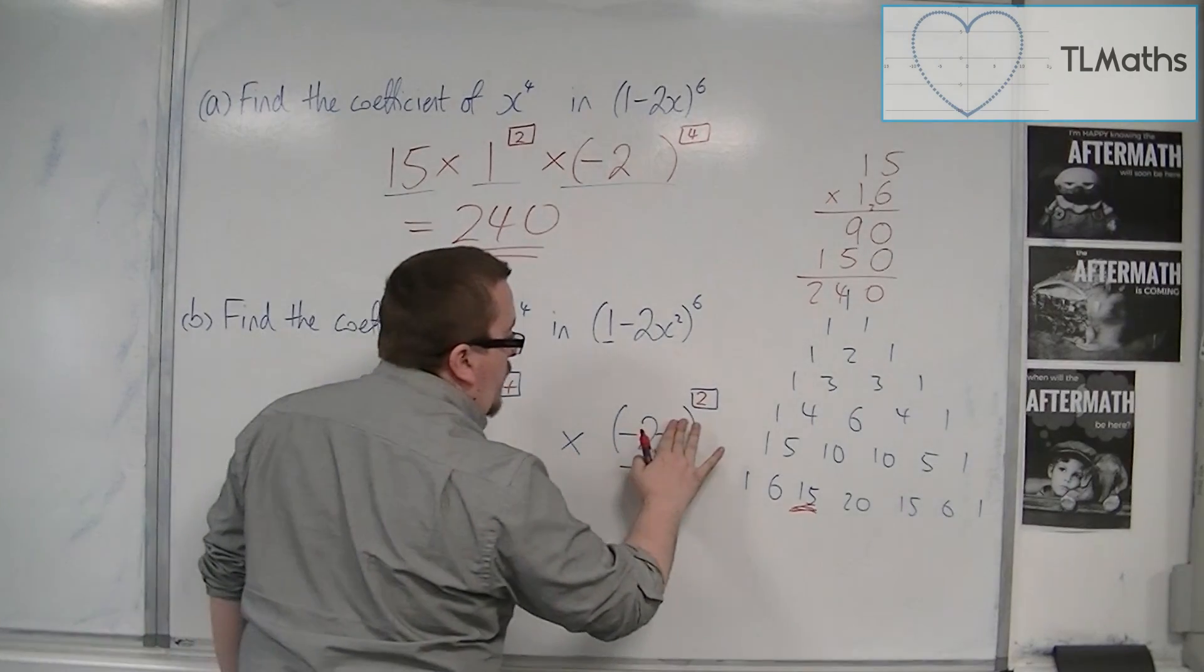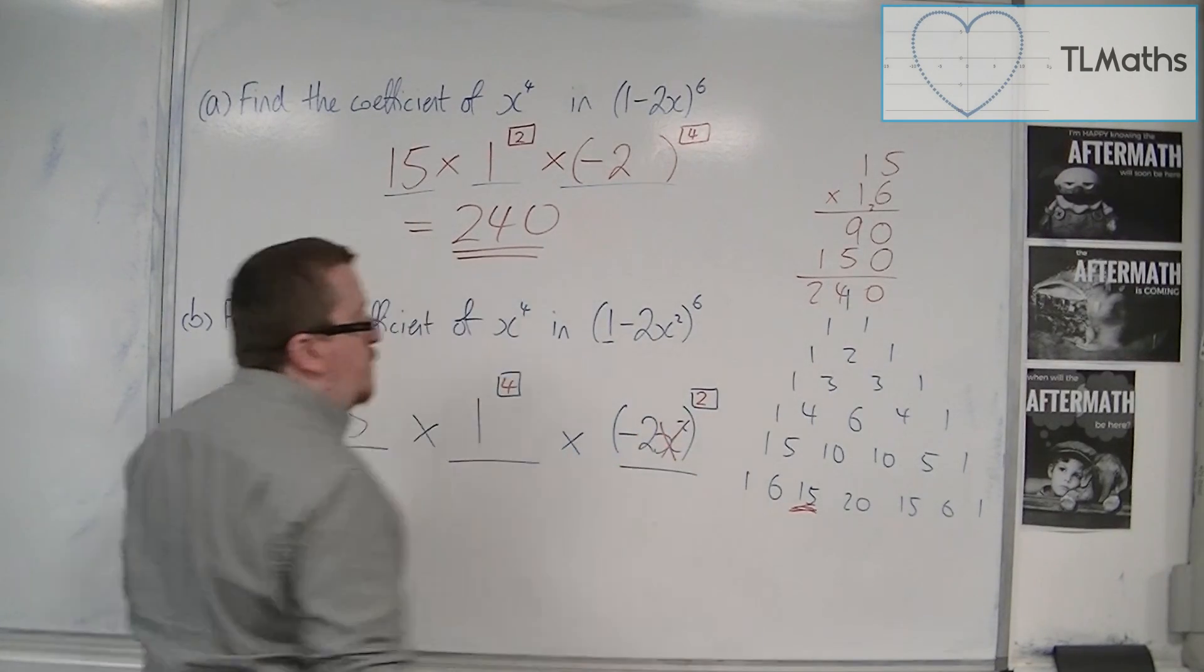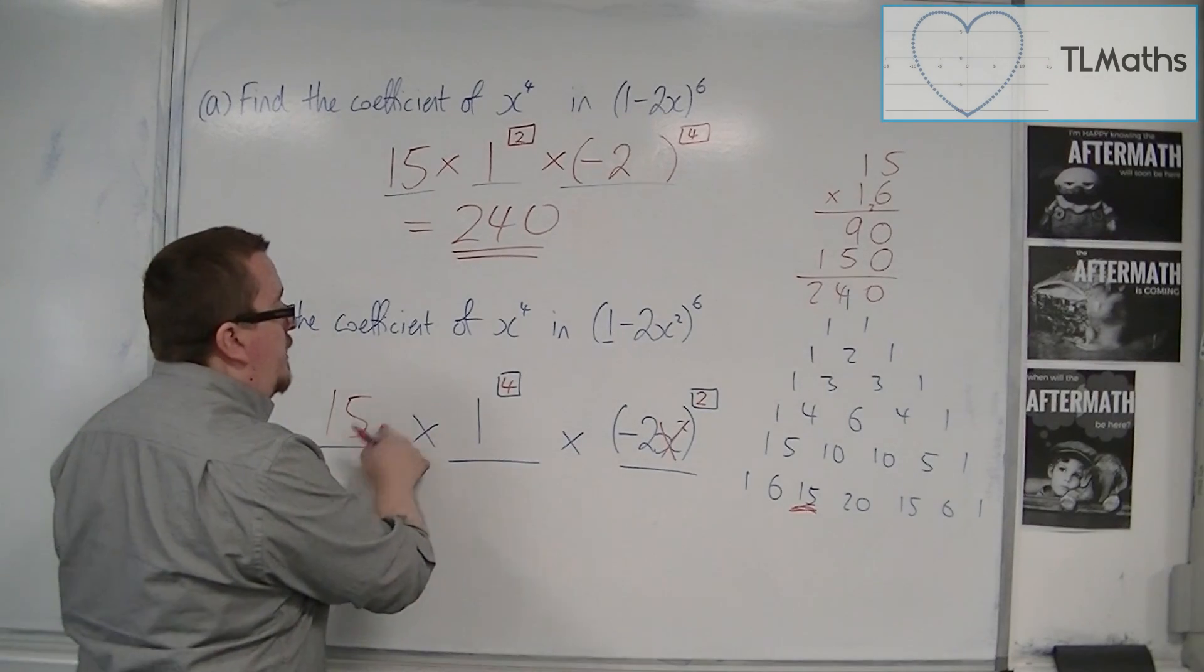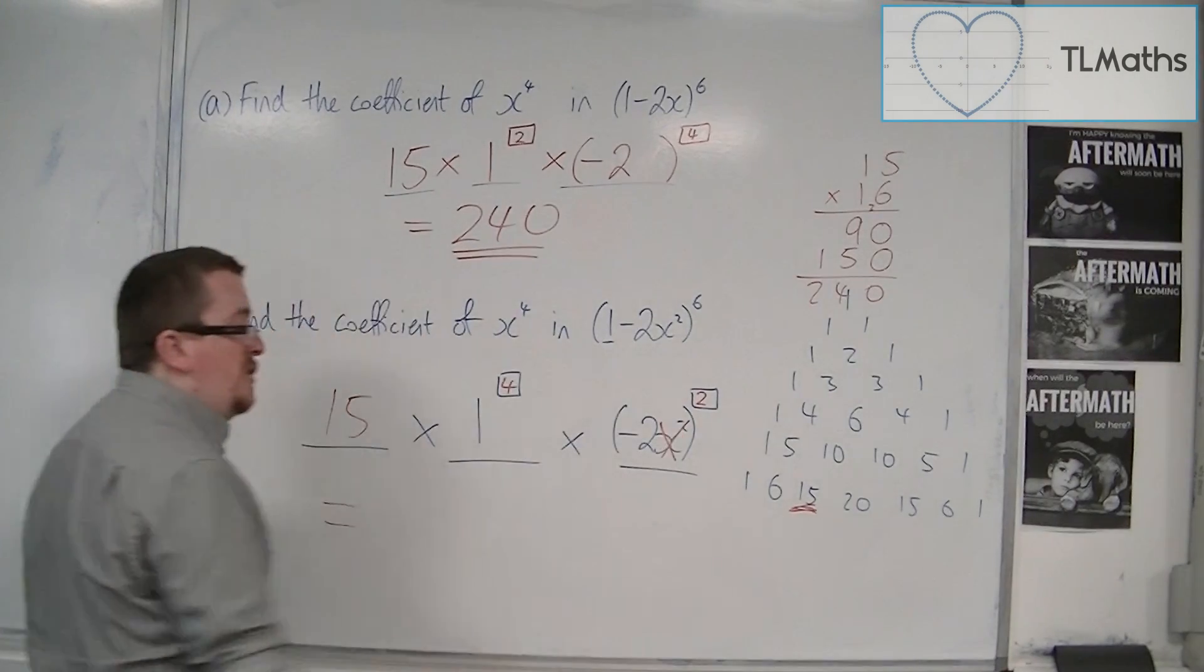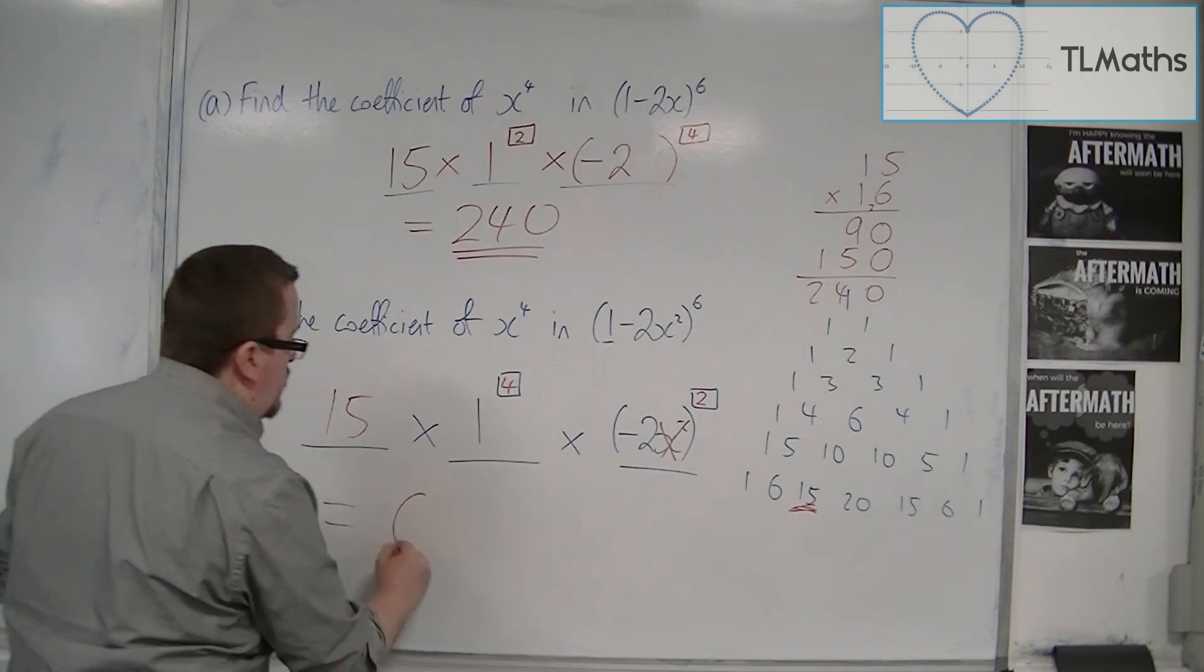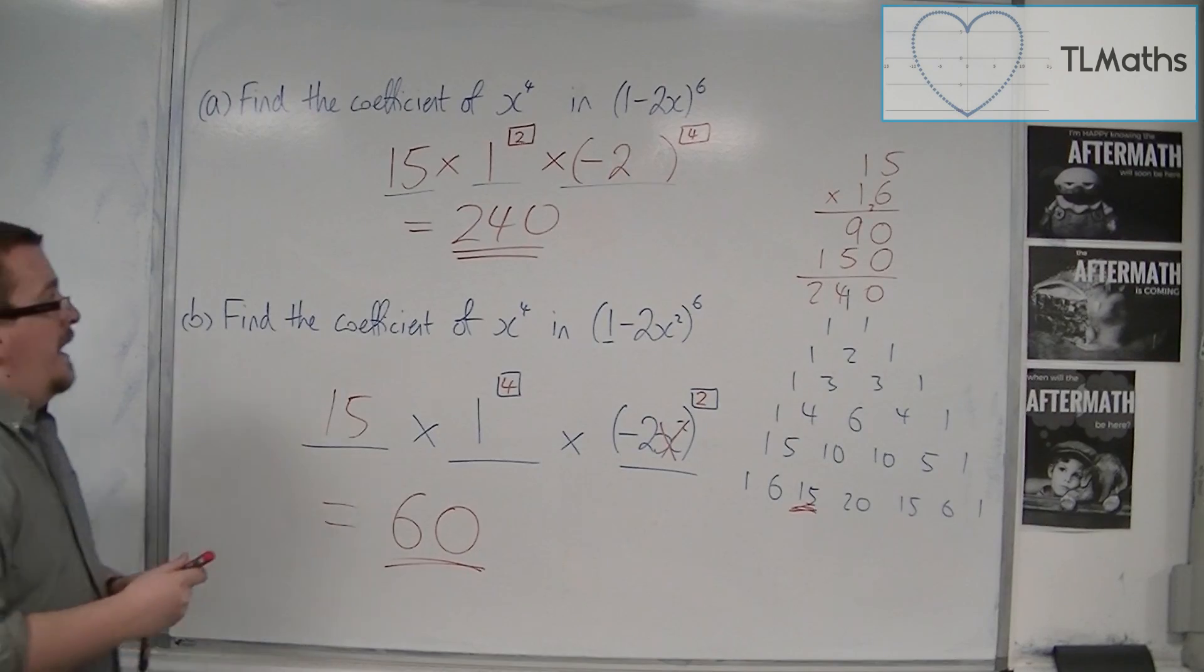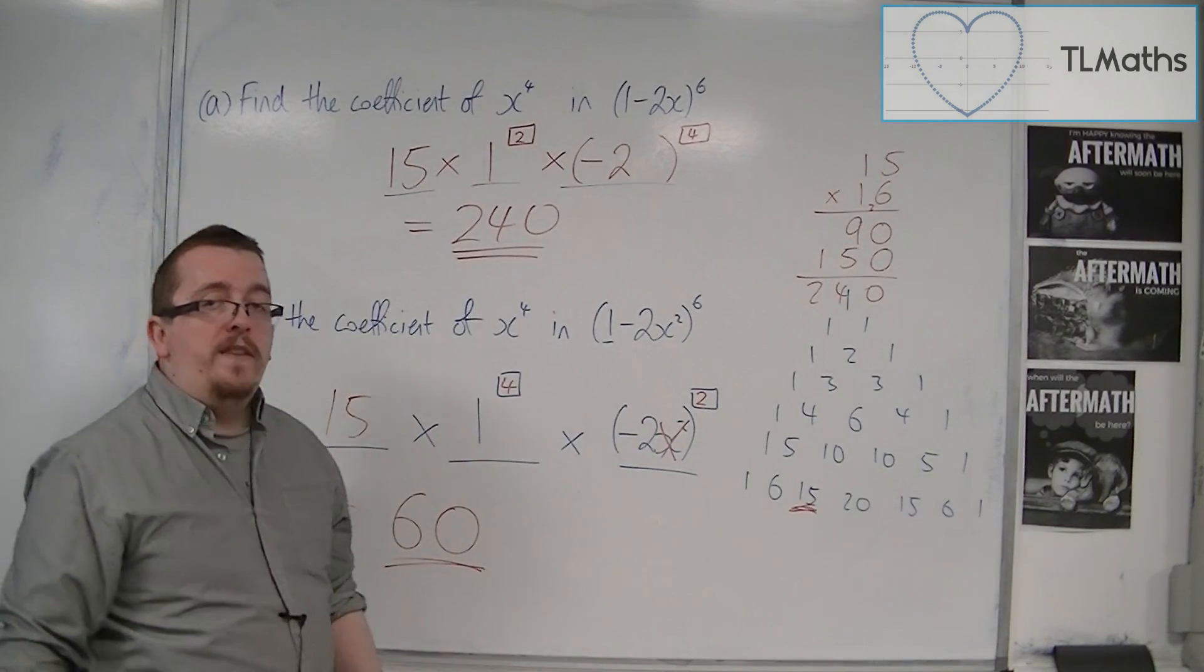And I don't want that x squared there anymore, so I can get rid of that. So the coefficient is 15 times 1 times minus 2 squared, so 15 times 4, which is just 60. And that is how I can find the coefficient in this case.